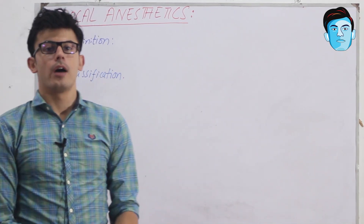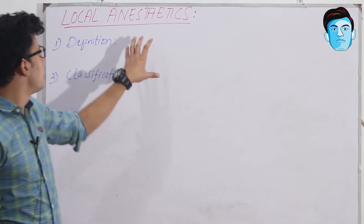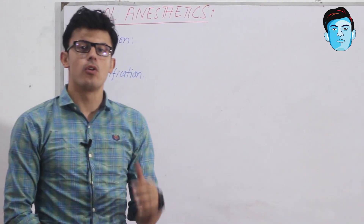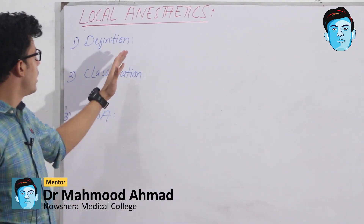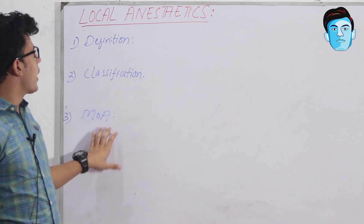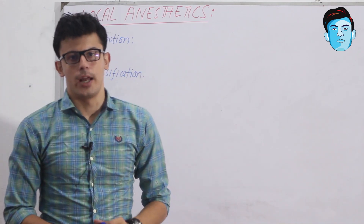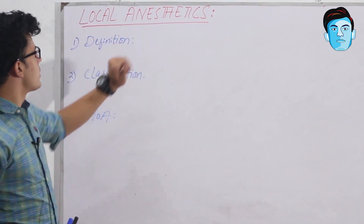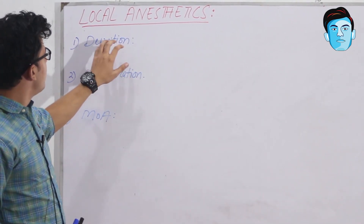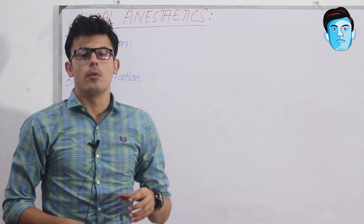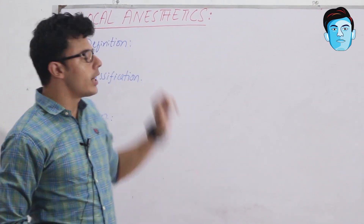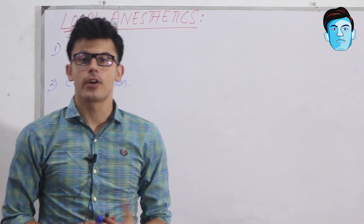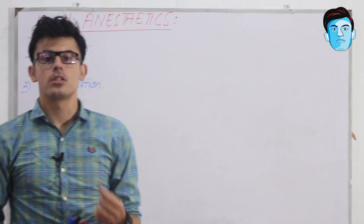Assalamu alaikum doctors. Today our topic of discussion is all about local anesthetics. In this lecture we will be focusing upon the definition, classification, and mechanism of action of local anesthetics. So what is the definition of local anesthetics? Local anesthetics are the weak bases that block nerve conduction and cause reversible loss of sensation in the parts supplied by a nerve.